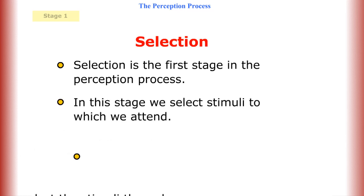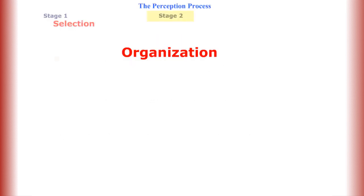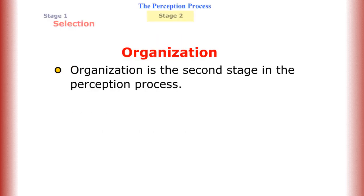Selection is the first stage in the perception process. In this stage, we select stimuli to which we attend. We select the stimuli through our senses: sight, sound, smell, taste, and touch.